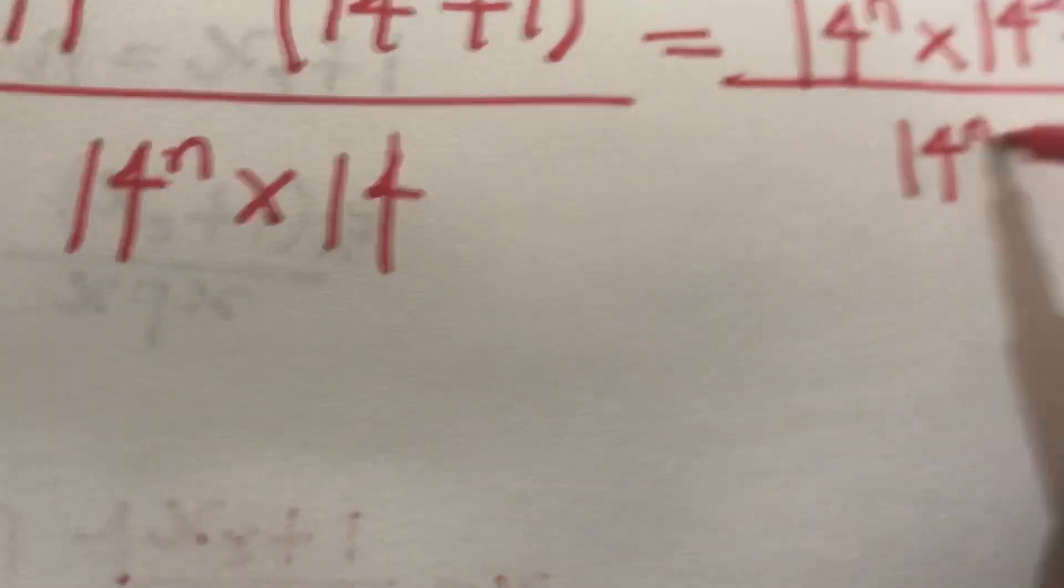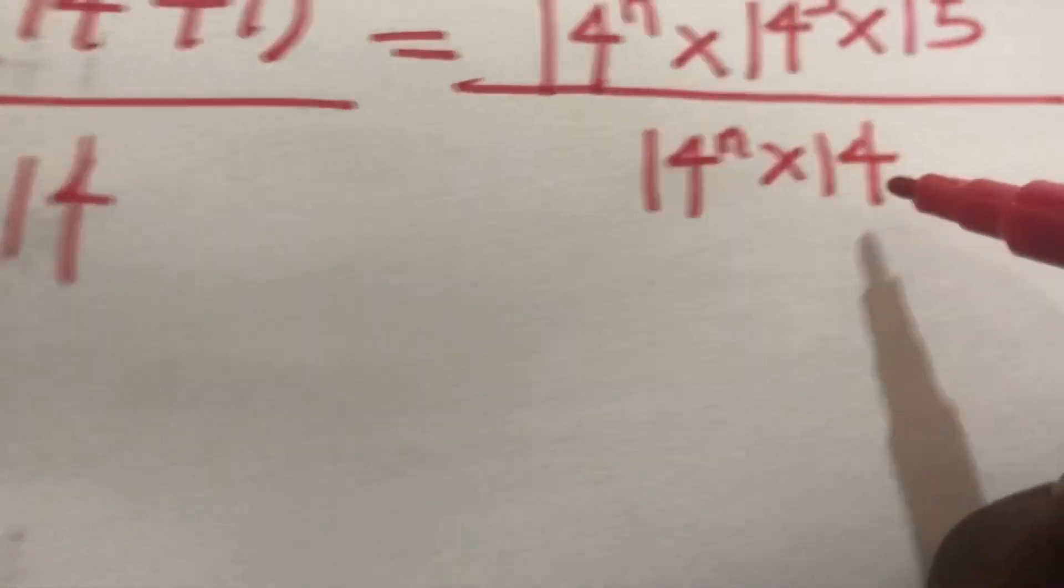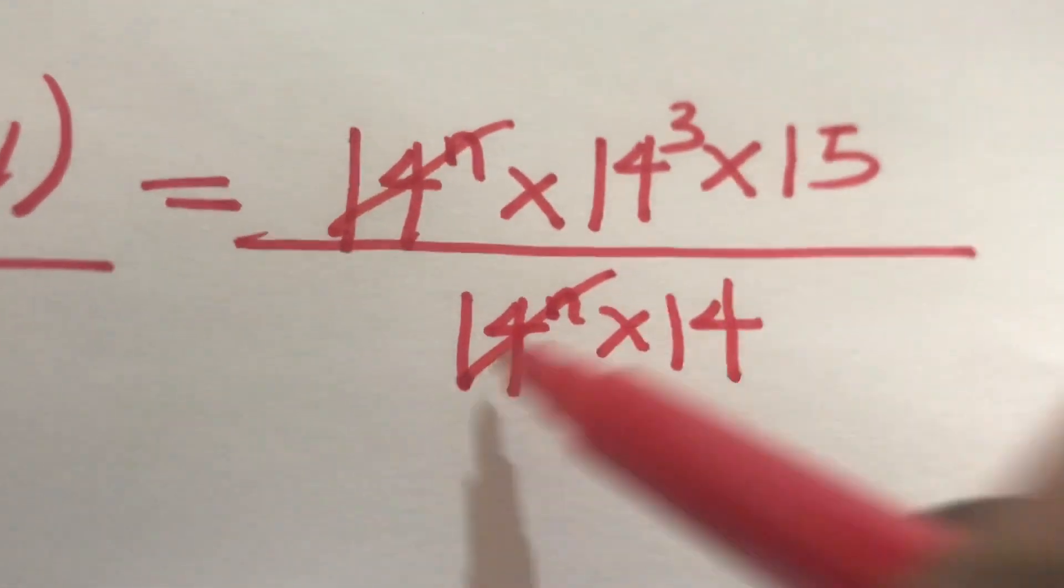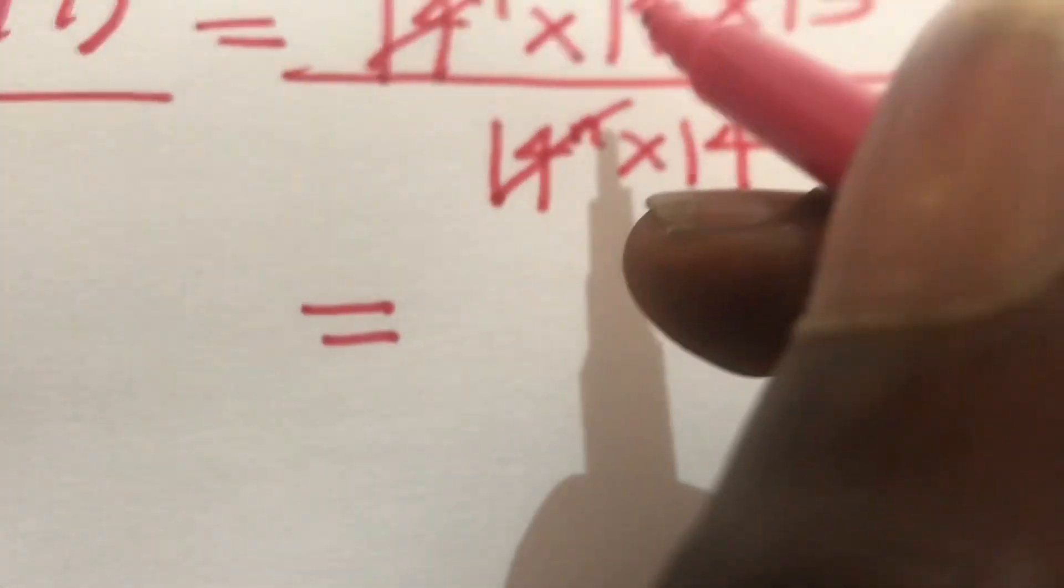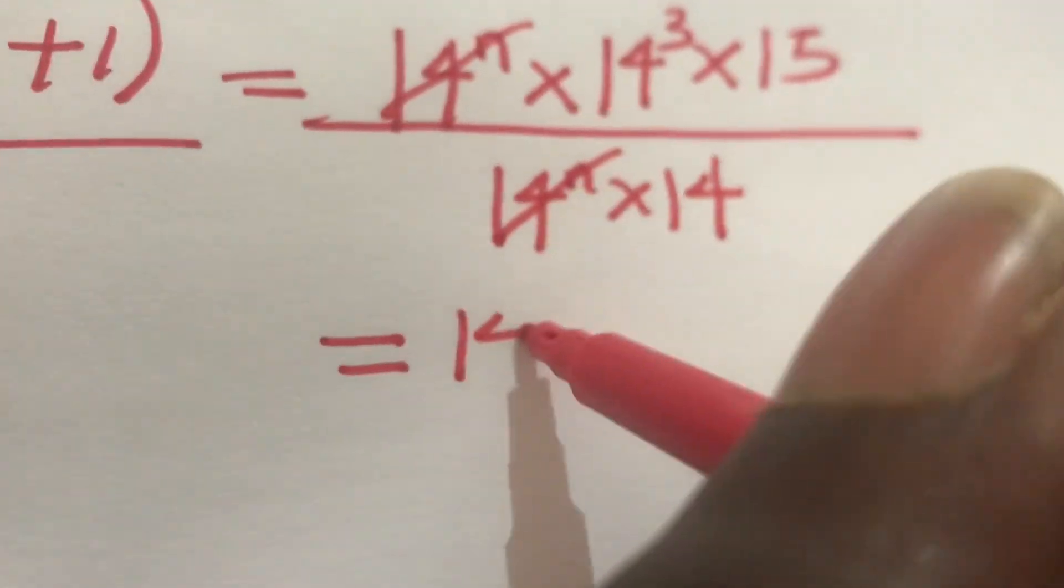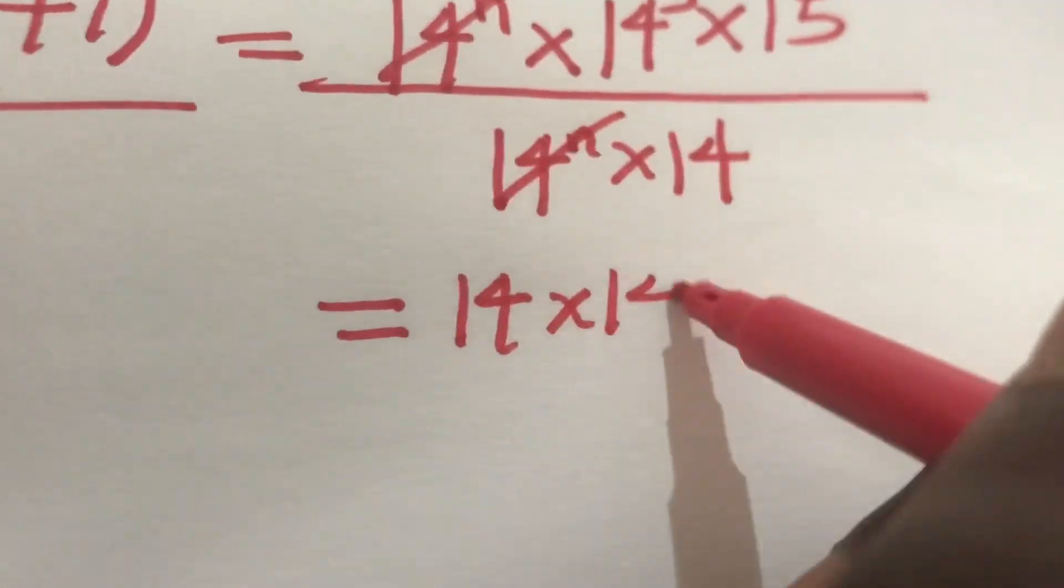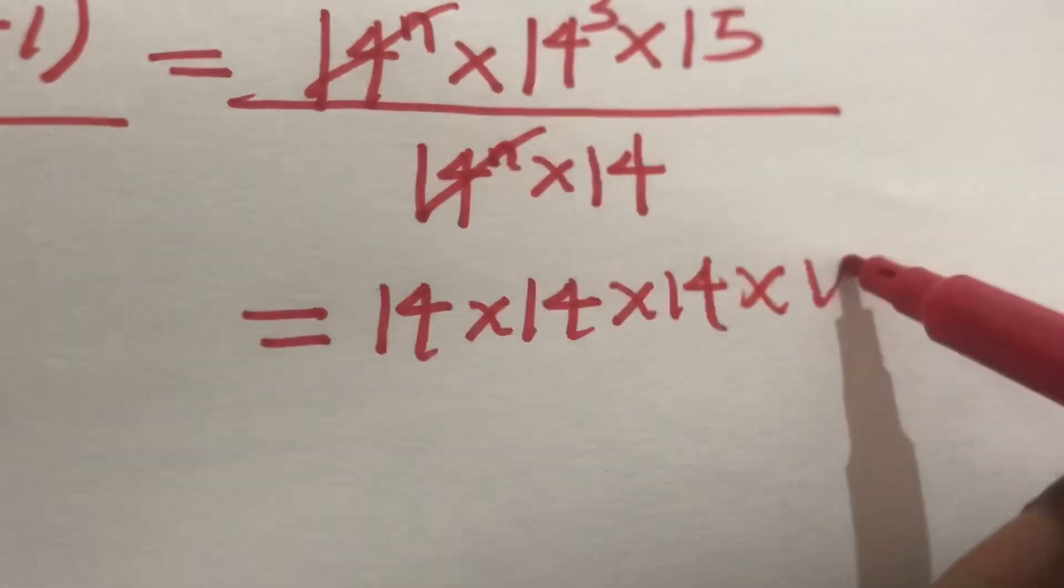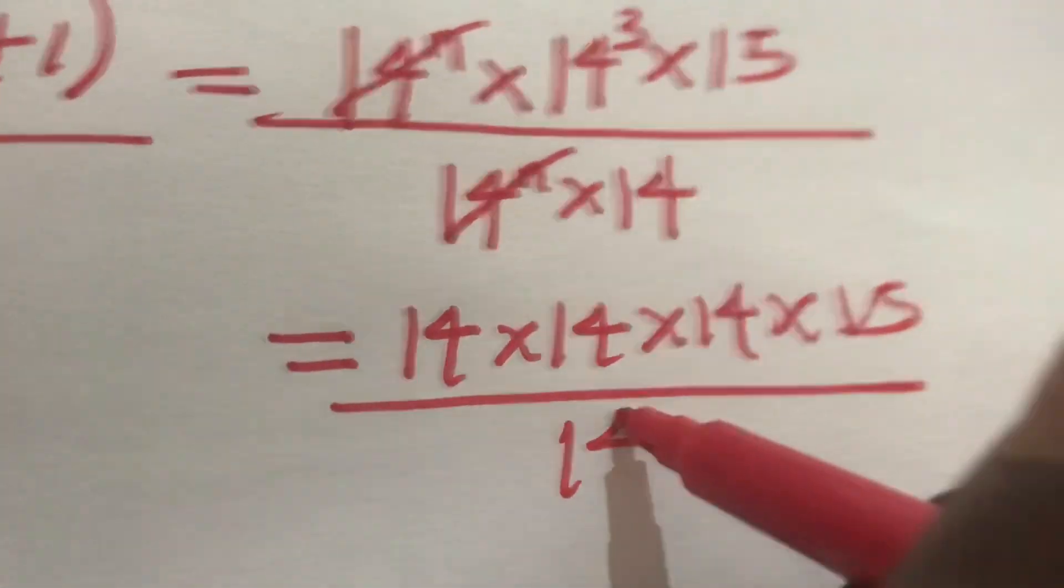If we have 14 to the power n plus 1 we have this. We have 14 to the power 3 means 14 in three places, times 15 all over 14.